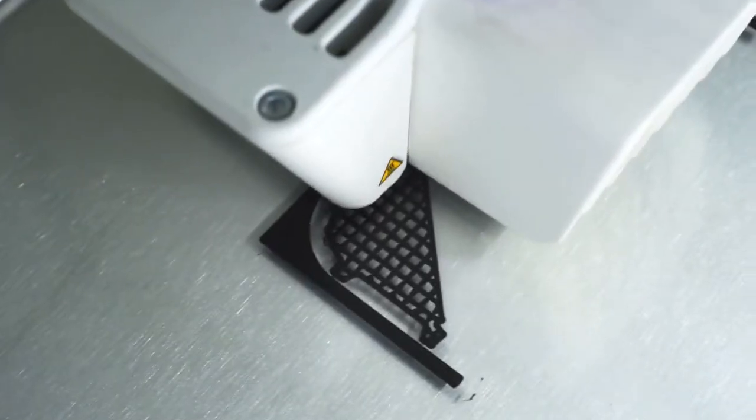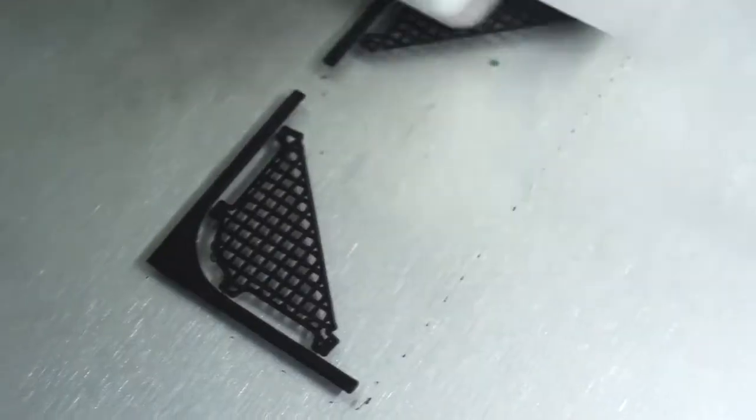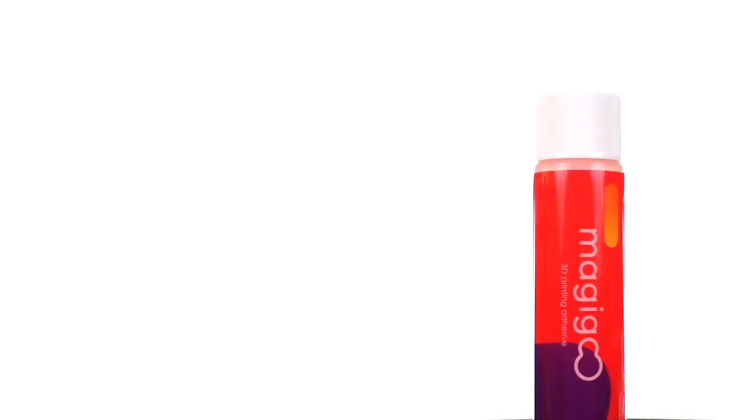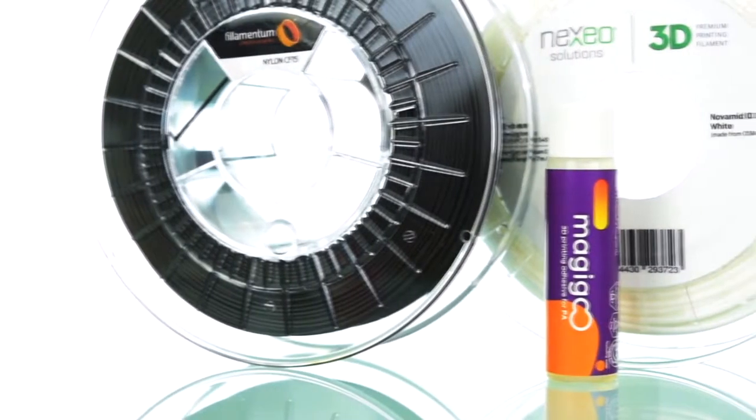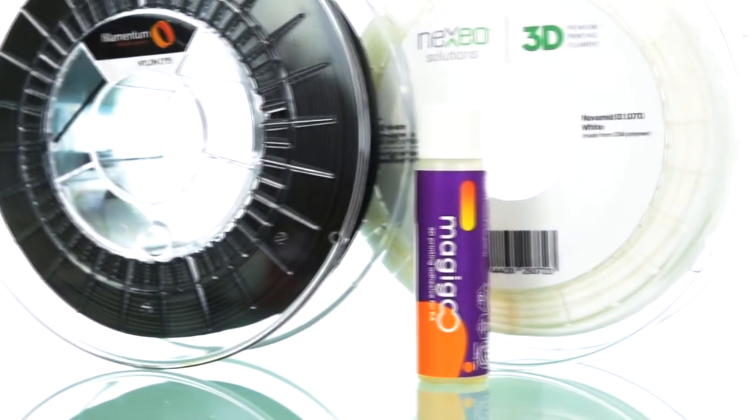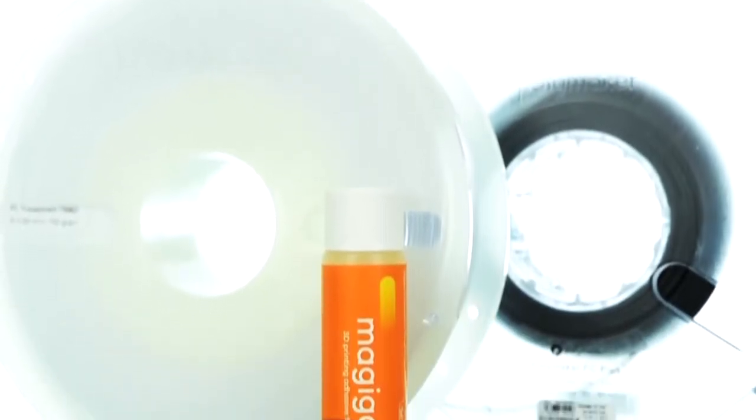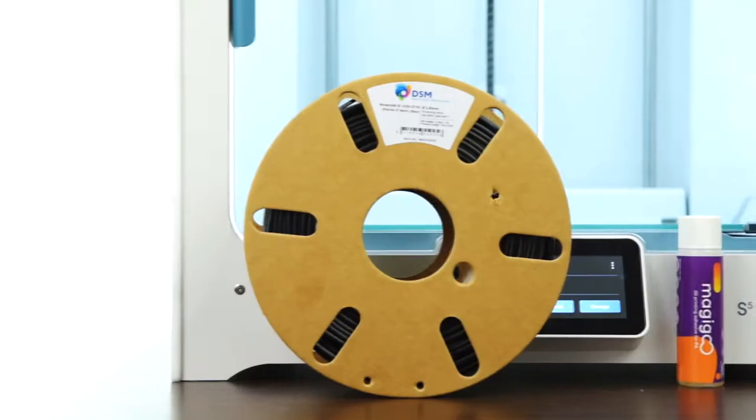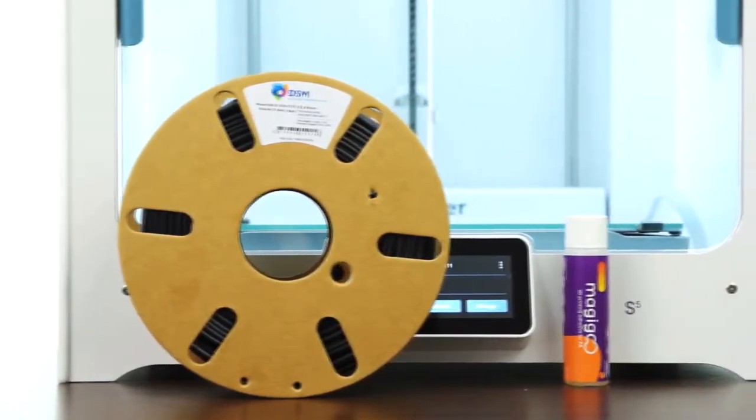Getting the first layer adhesion for your engineering materials right is no easy challenge. Magigoo Original and Magigoo Professional PA for nylon and carbon-filled nylon, and Magigoo Professional PC for polycarbonate have been specifically developed to make 3D printing with engineering-grade filaments easy and reliable.